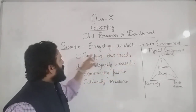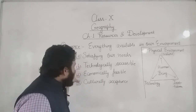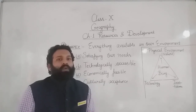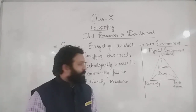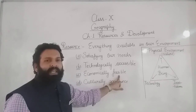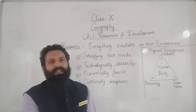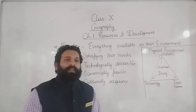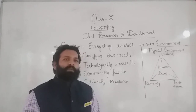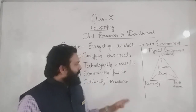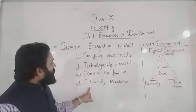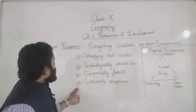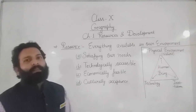To summarize: a resource is everything available in our environment which satisfies our need. Second, it must be technologically accessible — we must have the technology to use it. Third, it must be economically feasible — we must have funds to convert the physical object and the selling price must be higher than the cost of extraction. Fourth, it must be culturally acceptable — it must not hurt the sentiments of any group.